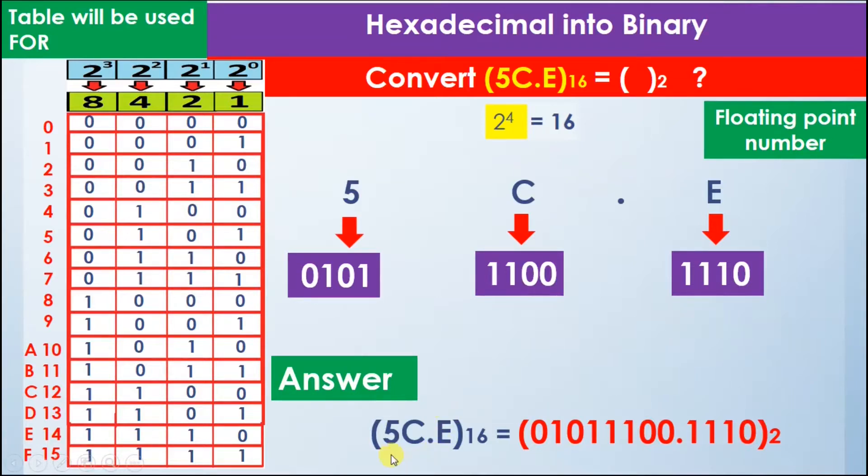Now we can say that the number 5C.E in hexadecimal is equal to 01011100.1110 in binary. This is how we can calculate conversion of hexadecimal number into binary using the floating point number.